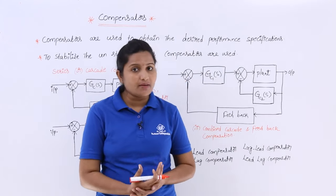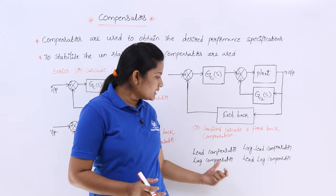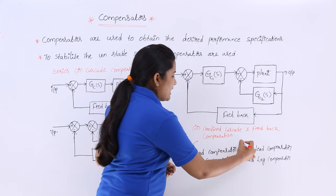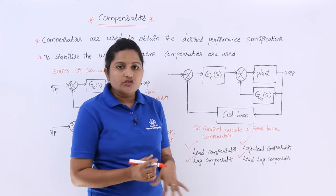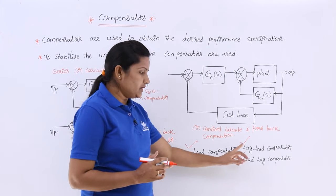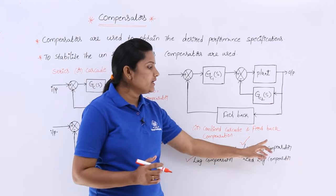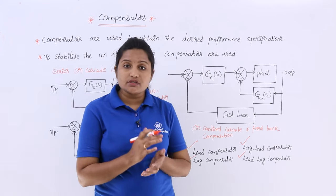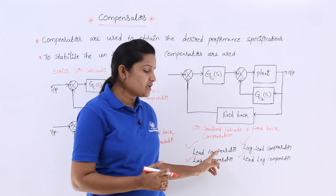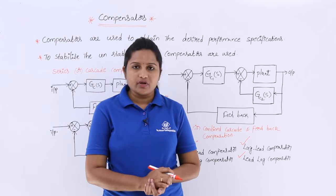Coming to compensators, we are having four types of compensators, though the greatly used ones are three. These are: lead compensator, lag compensator, lag-lead compensator, and lead-lag compensator. In the next classes, we are going to discuss each compensator with its effects and analysis. This is the introduction to compensators.